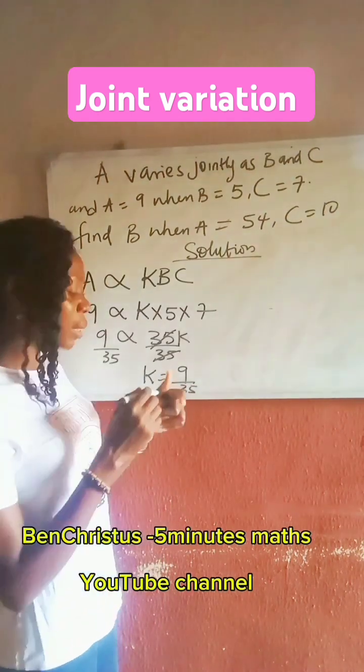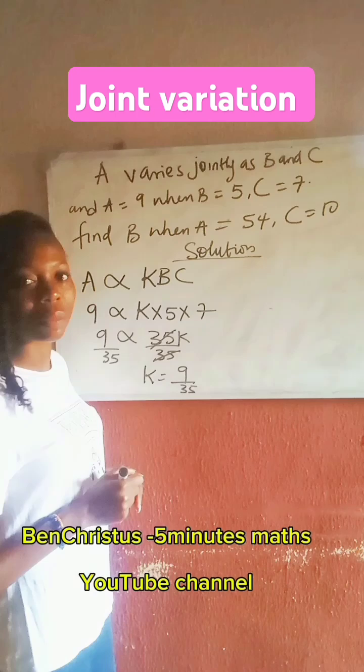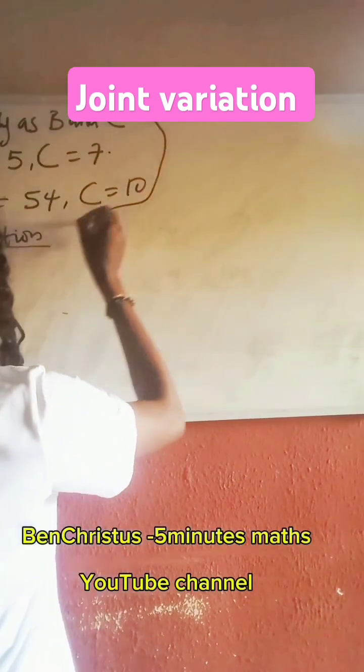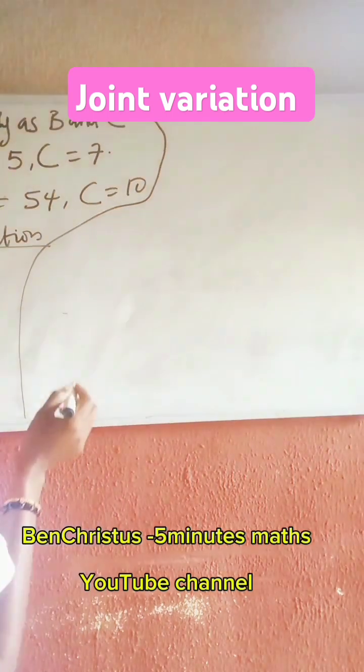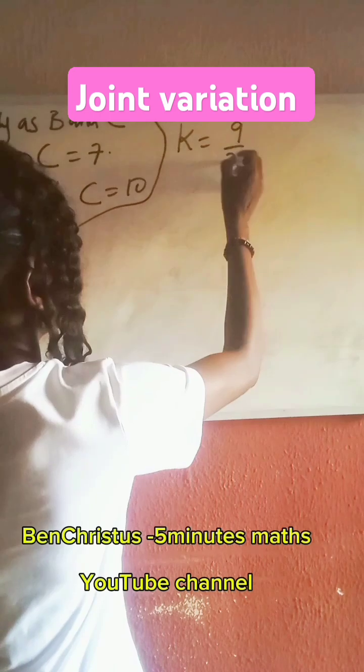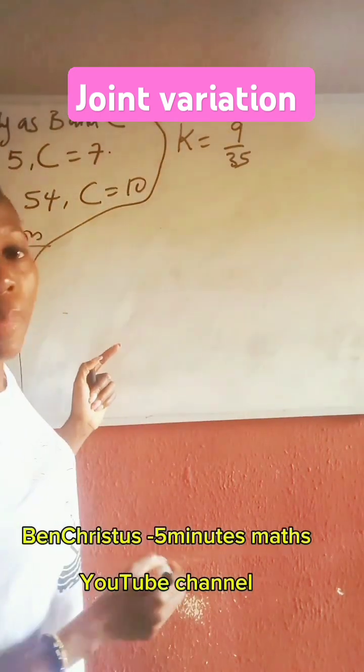So this will be put in our second formula. We have that K is 9 over 35.